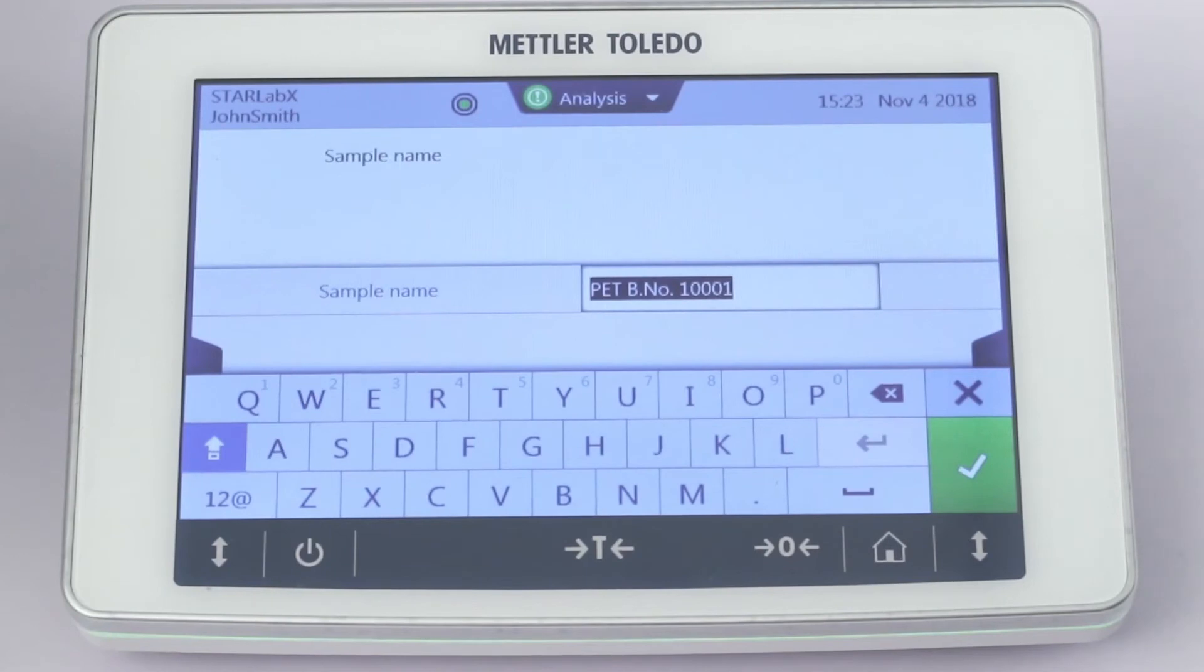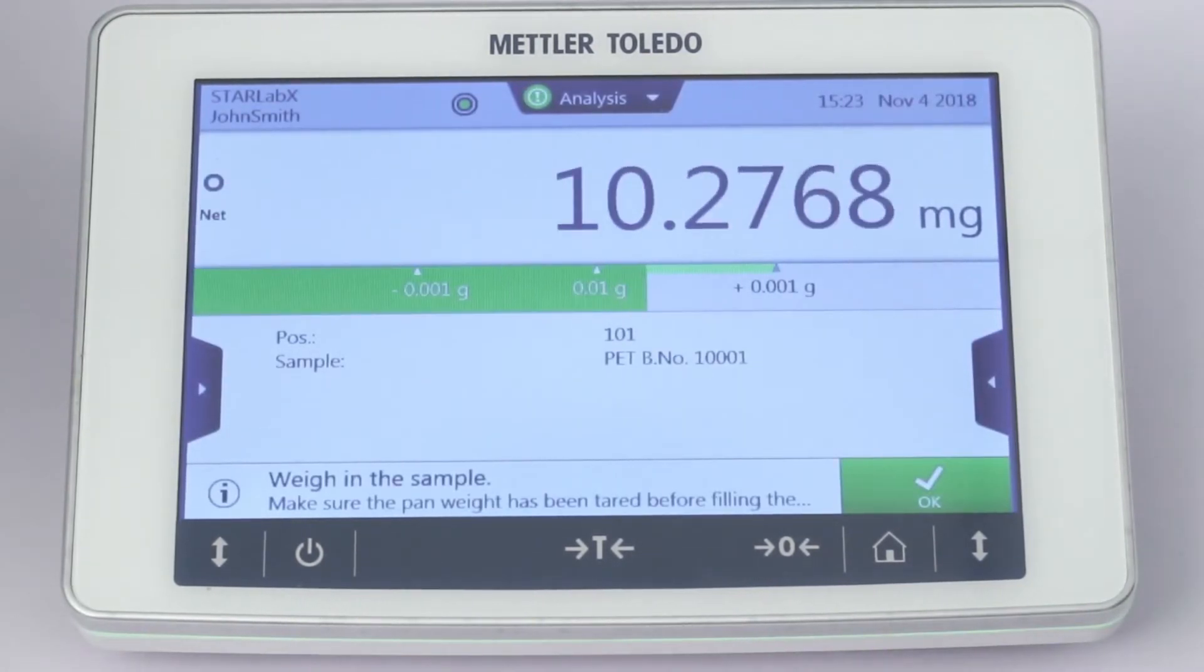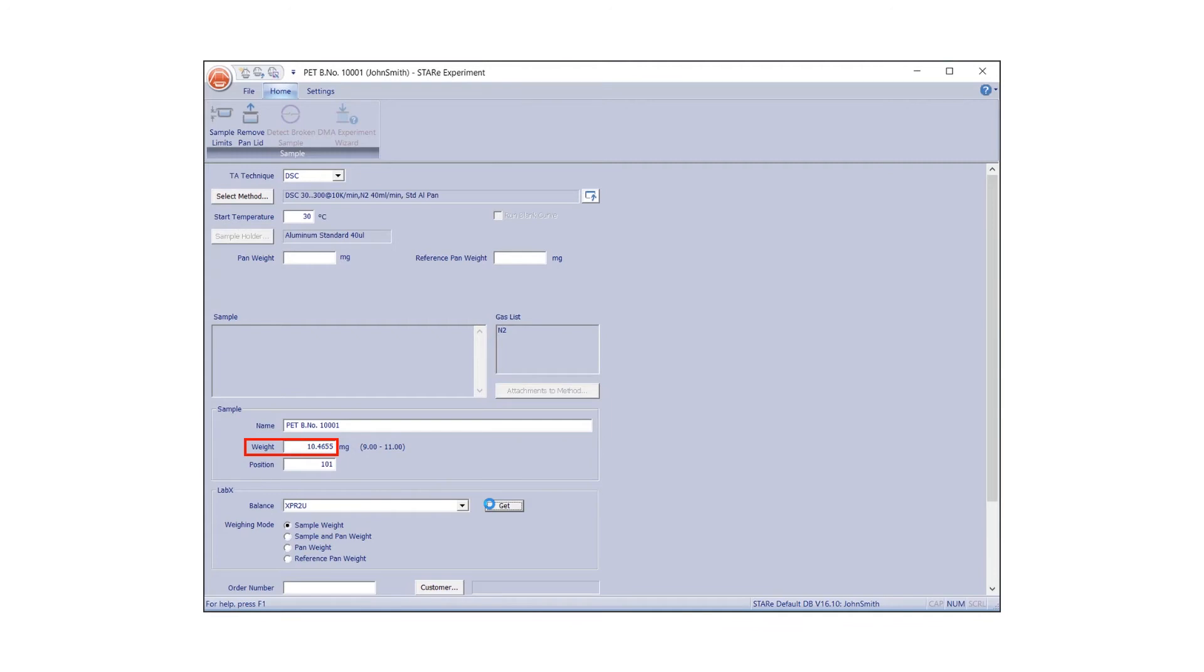In this example, a single sample weigh-in task was performed on a LabX microbalance connected to Star E. The SmartTrack feature on the balance terminal shows how much of the entire weighing range has been used. A green bar indicates that the weight value lies within specified limits. Once dosing is complete, the captured sample weight is automatically transferred to the Star E routine, or Experiment Editor.